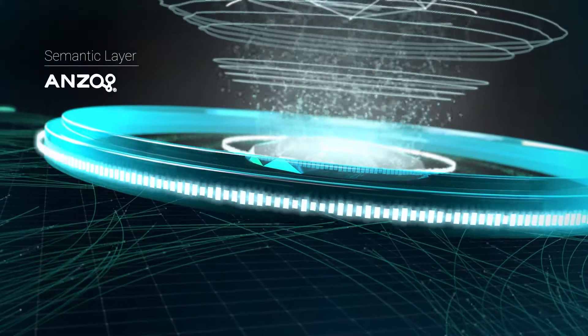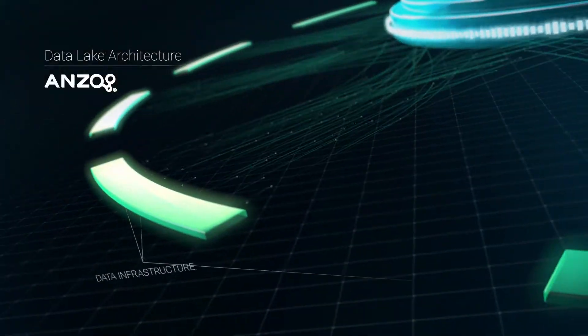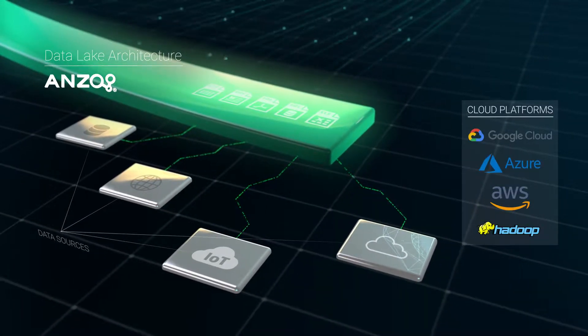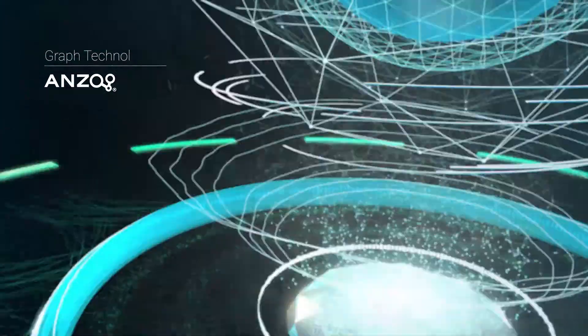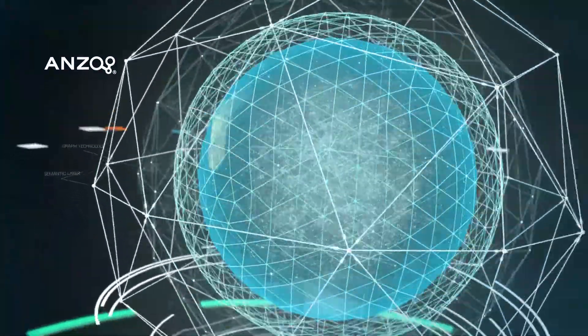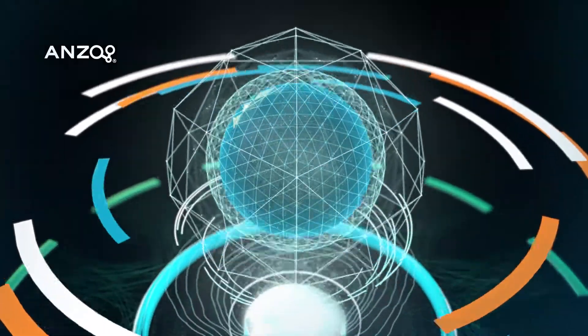Anzo combines a semantic layer which connects and gives meaning to data with a data lake architecture that allows us to use your own cloud or on-prem investments for your data management needs with our unmatched graph technology to give you and your analysts a one-stop shop for connecting, shaping, and analyzing data at massive scale.